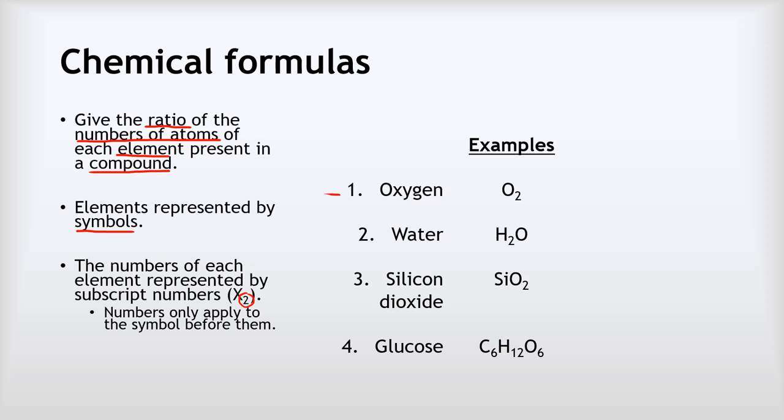When we draw these formulas, the elements are represented by their symbols, and the number of each element is represented by a little subscript number just after it. Subscript means small and just below the line. Importantly, the numbers only apply to the symbol just before them. So we've got formulas here: oxygen, water, silicon dioxide, glucose. You don't need to memorize those. These are just examples. But what I do want to talk about is how we write them. Notice always, we've got the symbol written correctly.